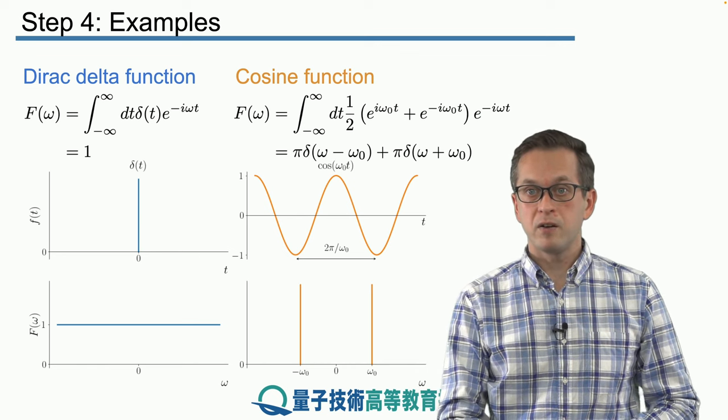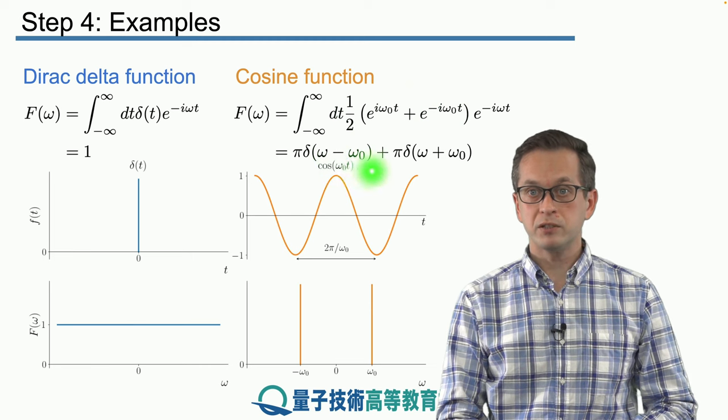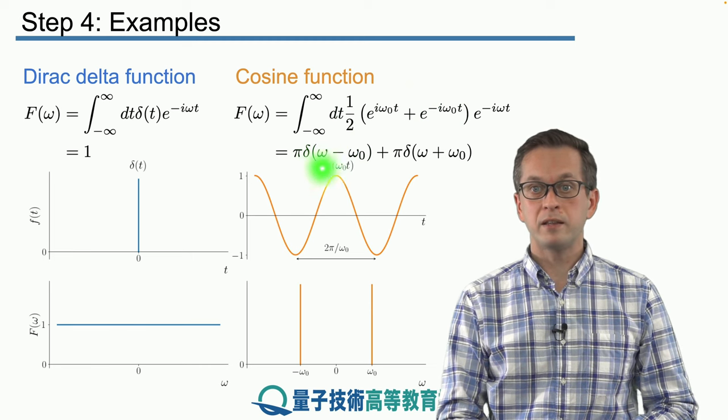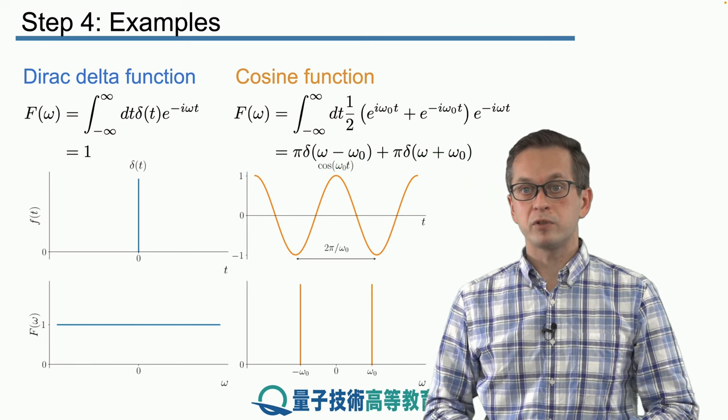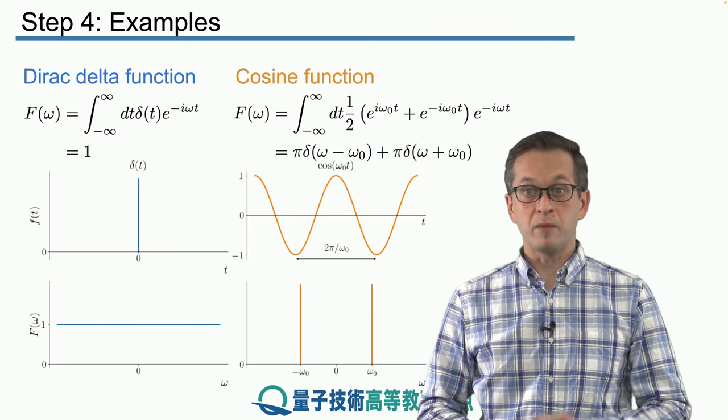And when we do the integrals of those, what we get is we get two delta functions. One delta function is located at position omega naught and the other delta function is positioned at minus omega naught.